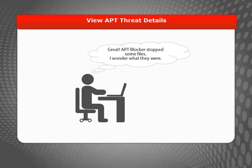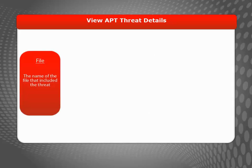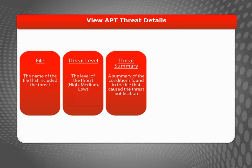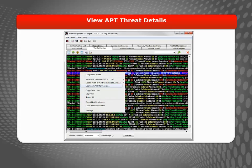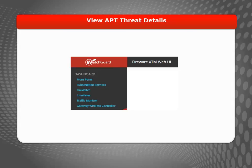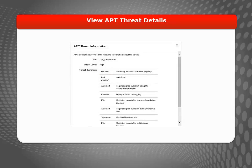If you look at the activity and reports and notice that threats have been blocked by APT Blocker, you can take a look at the log messages for more granular information. You can expect to see the file name and threat level, a brief threat summary, the MD5 file number, and the threat ID number reported for each detected threat. To look up APT Blocker threat information from Firebox System Manager, select the Traffic Monitor tab, right-click an APT traffic log message and select Look up APT information. To view information about APT Blocker threat actions from the Web UI, select Dashboard Traffic Monitor, then find and click on an APT Blocker log message to see all the details about the APT threat.